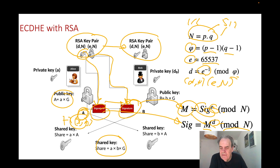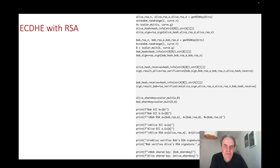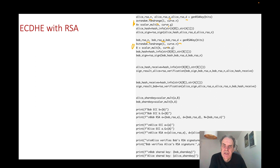Here is some code. We generate n, e, and d for Bob and Alice, generate their elliptic curve points b·G and a·G, hash the public point, and create a signature using the hash, the modulus n, and the private exponent.